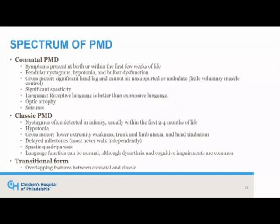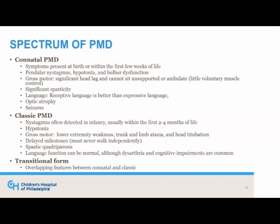The classic form typically presents a bit later in infancy with hypotonia, gross motor features such as weakness, trunk and limb ataxia, and head titubation. They also have delayed milestones and most never walk independently. They have a spastic quadriparesis. Language function can be normal, although dysarthria and cognitive impairments are common. Some argue that there's a transitional form overlapping the conatal and classic forms, which highlights that this is more of a spectrum than distinct phenotypes.